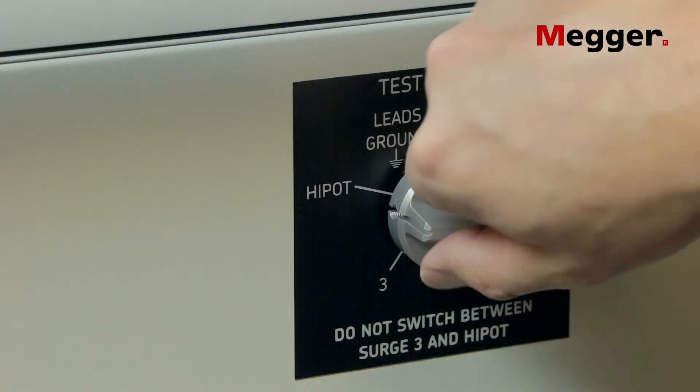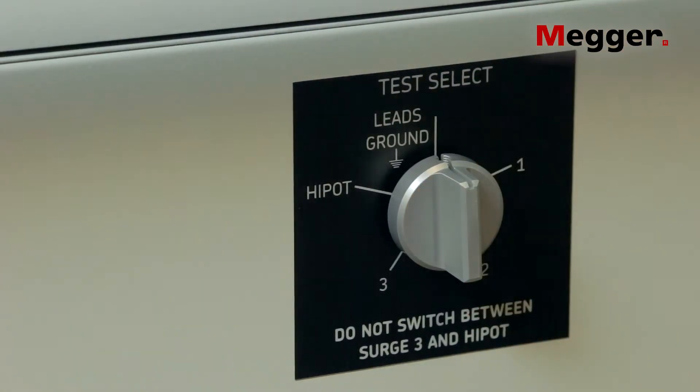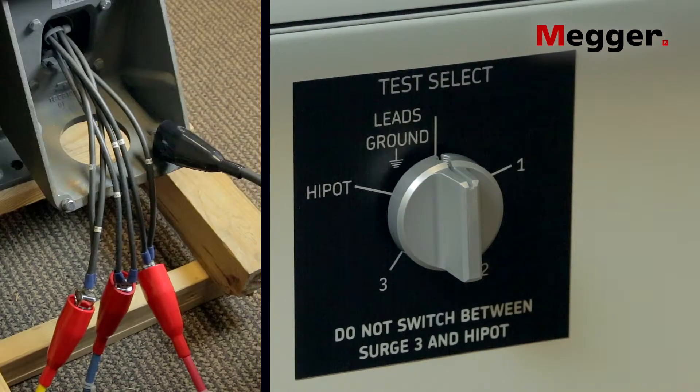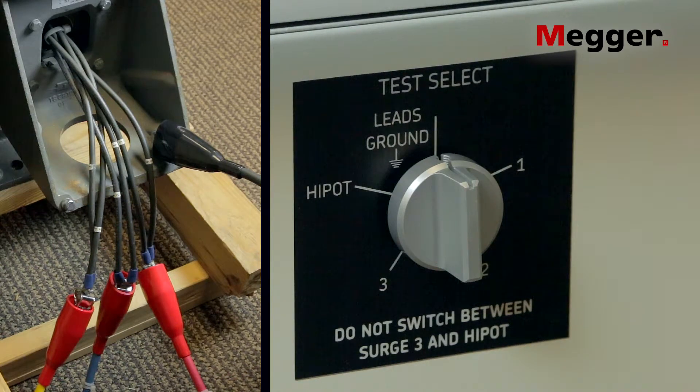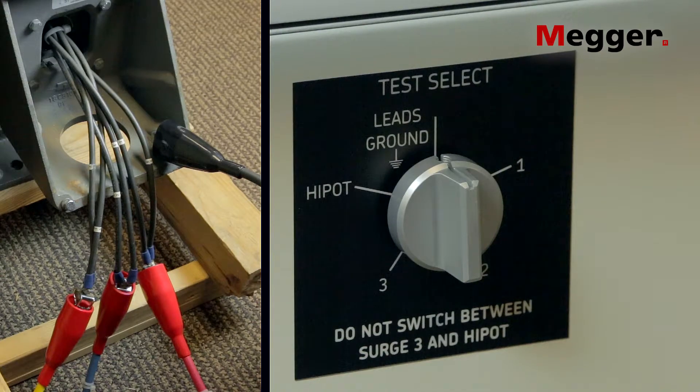Turn the test select knob to the lead's ground position. The DX will remind you to do this. To ensure the test circuit is adequately discharged, maintain the ground connection after testing for the same duration as the high voltage was applied.